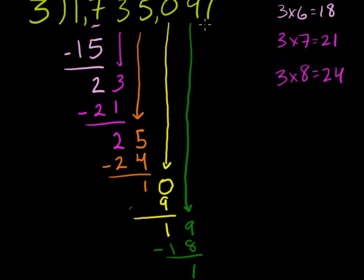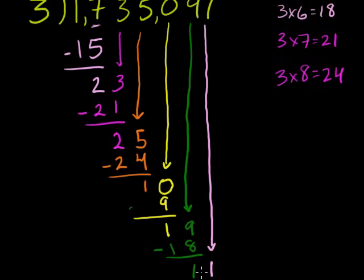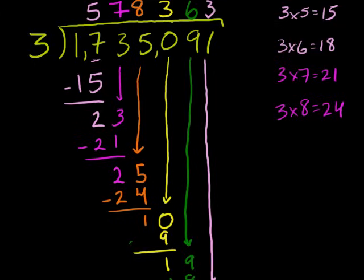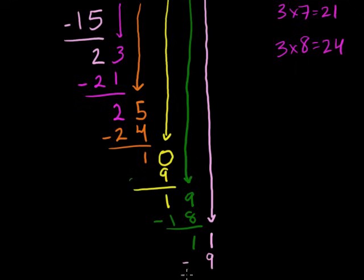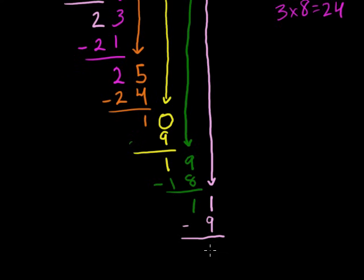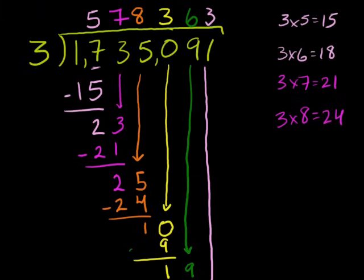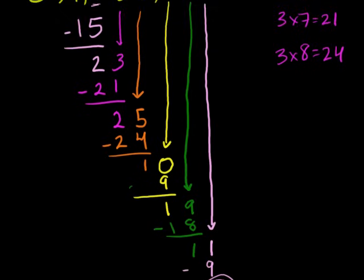We bring down this 1. 3 goes into 11 how many times? 3 times 4 is 12 — too big. So it goes in 3 times. 3 times 3 is 9. We subtract and get 2. There's nothing left to bring down, so we're done. We're left with a remainder of 2. So 3 goes into 1,735,091 — it goes in 578,363, remainder 2.